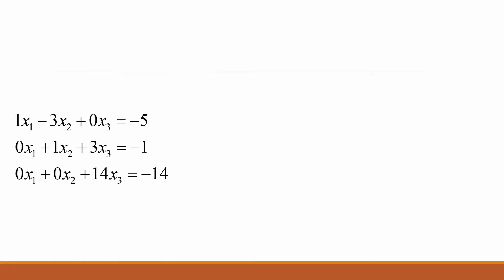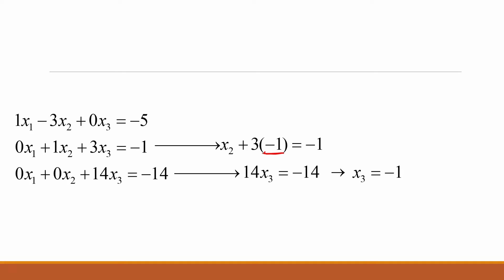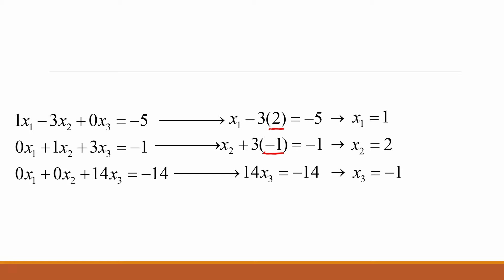To begin solving for X, start with equation three, which simplifies to 14X₃ equals negative 4. To simplify equation two, use back substitution and substitute negative one for X₃; this equation simplifies to X₂ equals 2. To simplify equation one, again use back substitution and substitute positive 2 for X₂; this equation simplifies to X₁ equals 1. Rewrite this in matrix form so that X equals the matrix shown. This will be the final answer to the linear system.